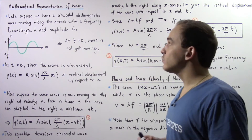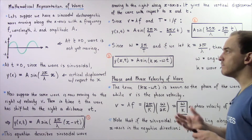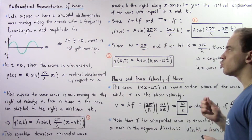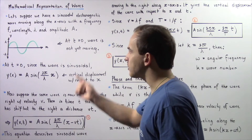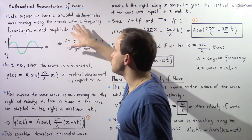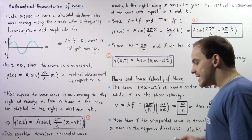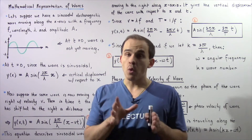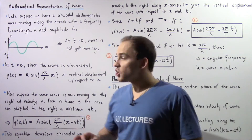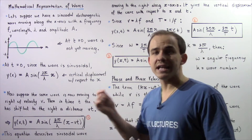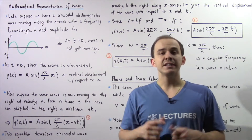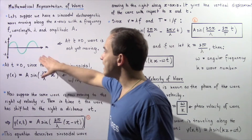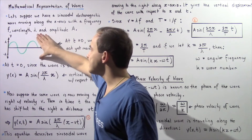Let's suppose that we begin with a sinusoidal wave — say, an electromagnetic wave moving along the x-axis with a velocity v, a wavelength lambda, and an amplitude given by capital A. At an initial time of t equals zero seconds, let's suppose our wave is not yet moving, meaning its velocity is zero.